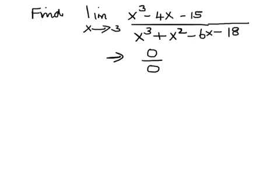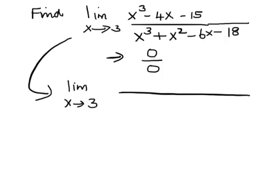To apply L'Hopital's rule means that this limit is the same as the limit as x approaches 3 of the rational expression, which is obtained by getting the numerator to be the derivative of the numerator of the existing rational expression, which will be 3x squared minus 4.